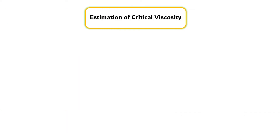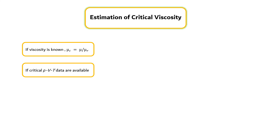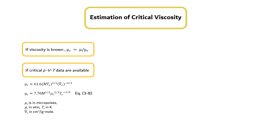The values of the critical viscosity may be estimated in one of the following ways. First, if viscosity is known at a given reduced pressure and temperature, μ_c can be calculated from the equation μ divided by μ_R. Or, second, if the critical PVT data are available, then μ_c may be estimated from the empirical relations as shown in equation 3.8.